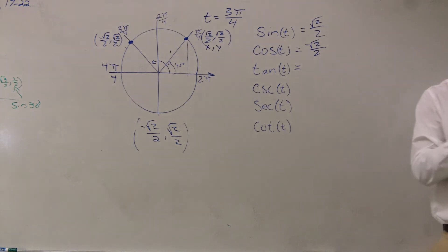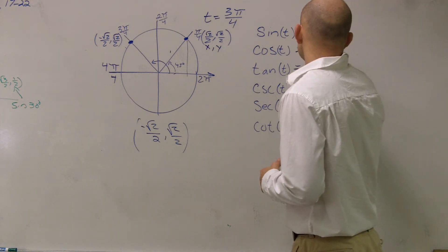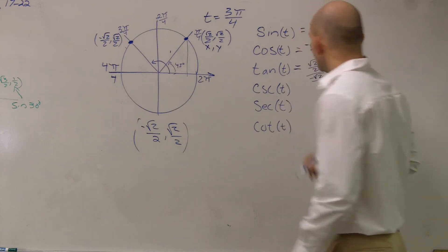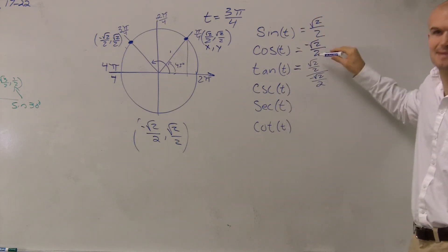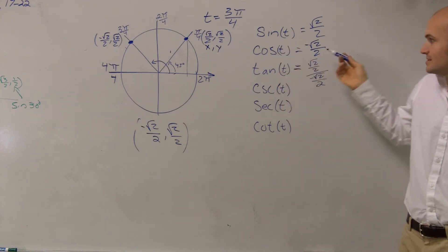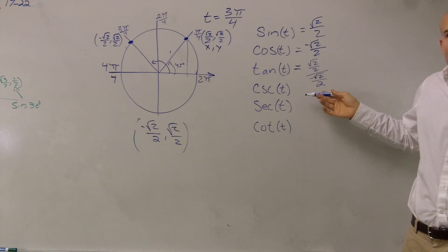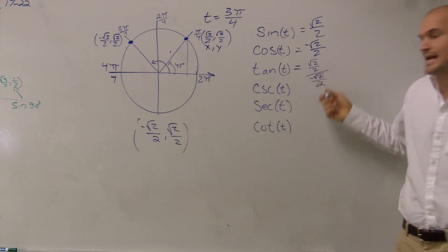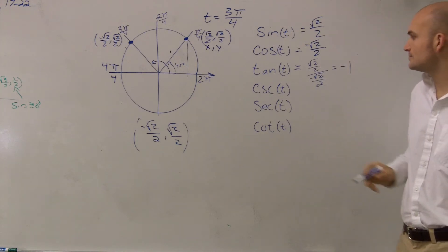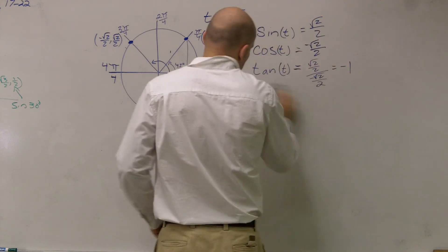Tangent is going to be your y coordinate over your x coordinate. So it's √2/2 divided by negative √2/2. Well yes, these are exactly the same number. I know they're fractions, they look crazy, but it's the same thing as like 5 divided by negative 5, right? They're the same thing. So you can just cancel them out and say they equal negative 1.